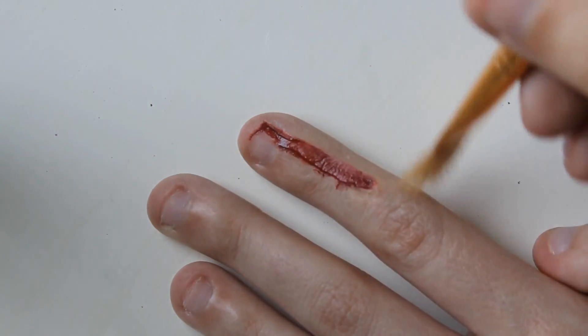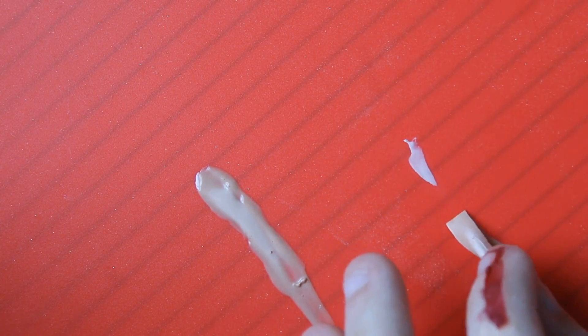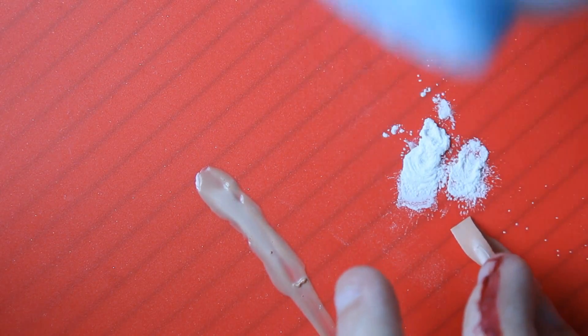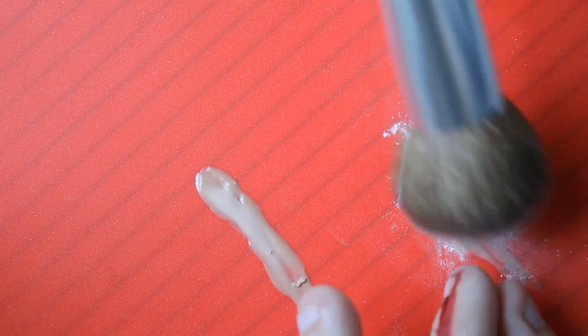The fake skin flap we made earlier should be dry by this point. I'm taking a little bit of baby powder, dusting over it, then peeling it off. I'm applying baby powder on the back because liquid latex loves to stick to itself and you do not want that to happen.